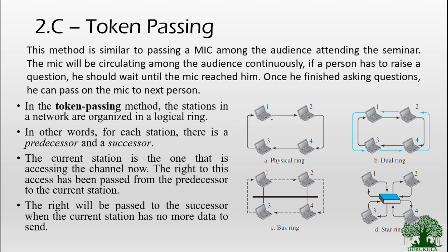As you can see, station 1, station 2, station 3, and station 4 are connected in a ring type fashion. First, assume the token is with station 1. Station 1 can send and receive frames for a particular time period, and once station 1 completes its frame transfer, the token is passed to station 2, which can now send and receive frames. Once station 2 finishes, it passes the token to the next station, and likewise the token keeps shuffling between all devices connected in the logical ring. Figure B represents the dual ring topology and diagram C represents the bus ring topology — even though systems are connected in a bus fashion, the token is passed in a ring fashion. The dotted line represents the direction of token passing from one node to another, and the same concept applies in star topology as well.